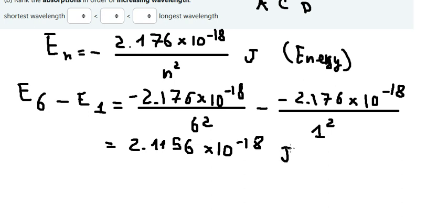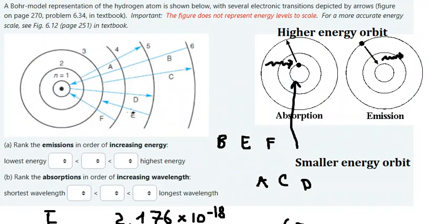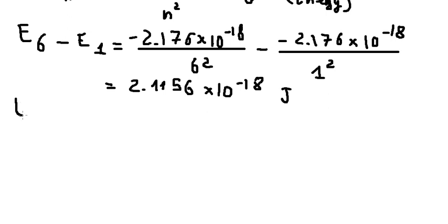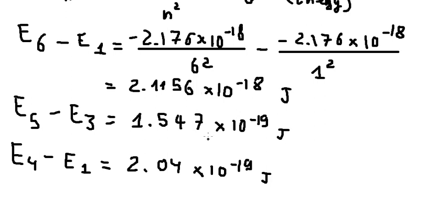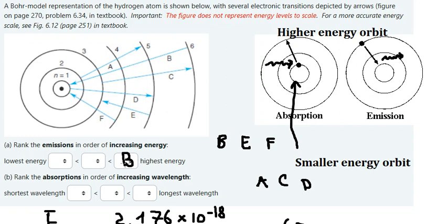Similarly, we calculate E for transition E (n=5 to n=3) and transition F (n=4 to n=1). Based on these calculations, B has the maximum energy, followed by E, then F with the minimum energy. So the order is B, E, F from highest to lowest energy.